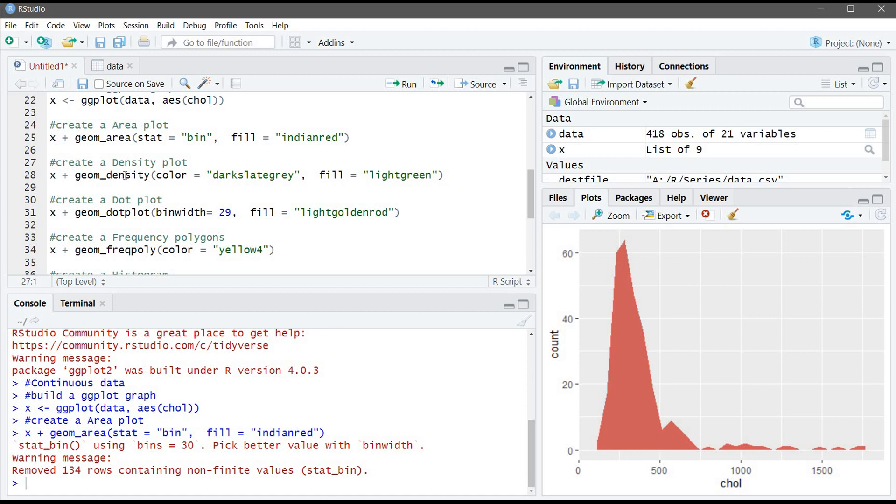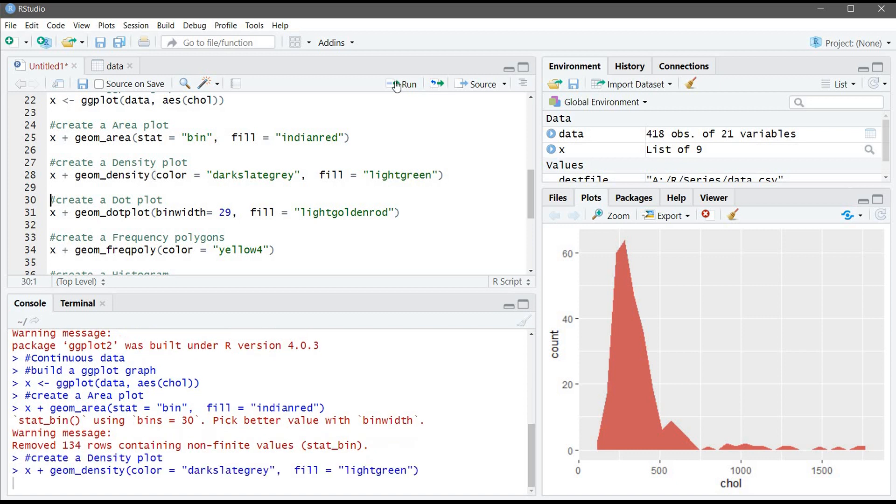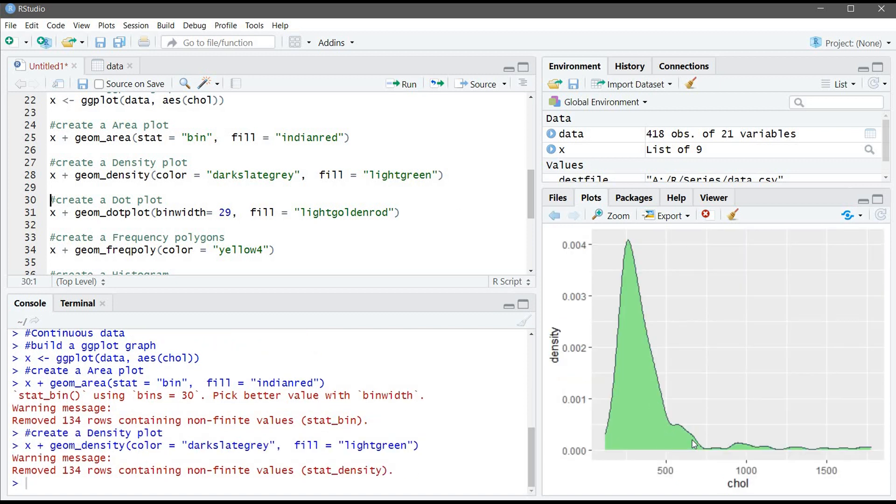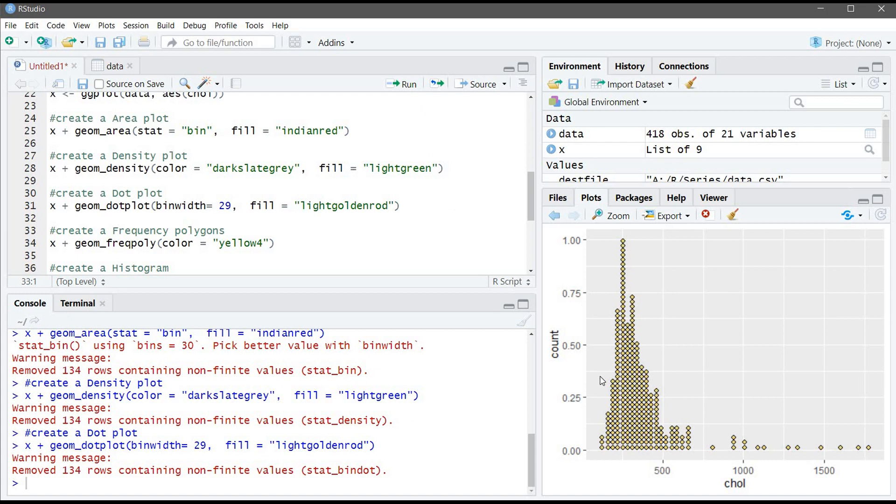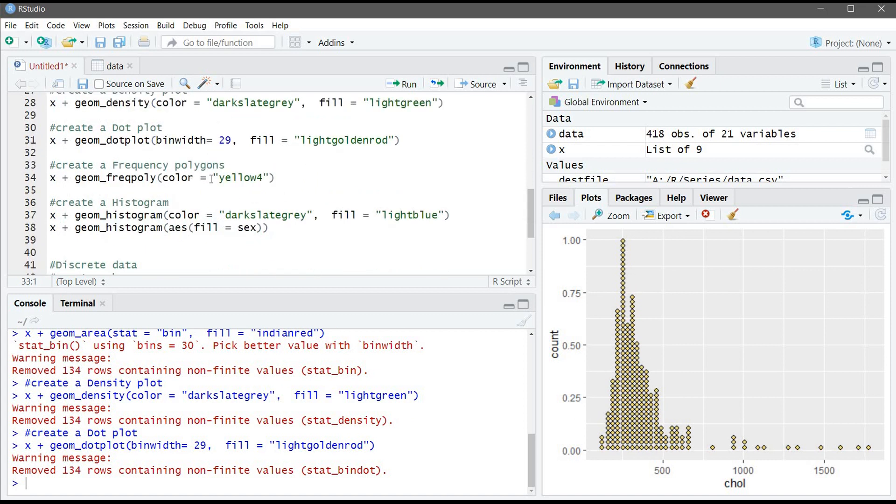So let's go to density plot. Density plot is similar to area plot, it just will make it a little bit smoother. We will use different colors for the lines and the fill will also be light green. So let's run that. It's a little bit smooth but similar to the area plot. For the dot plot, here we specify the width of the dot and also specify the color. So let's run it, and here we can see the dot plot.